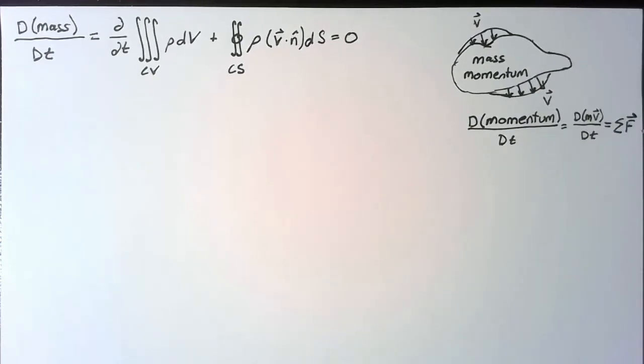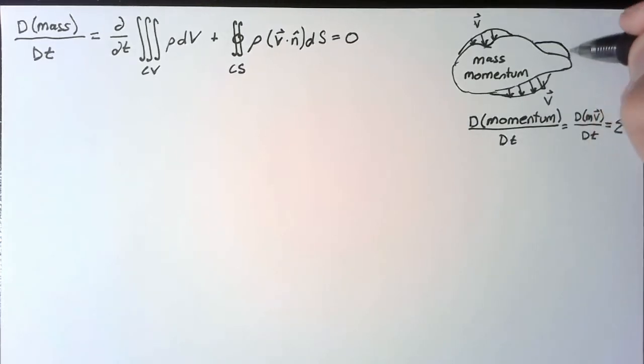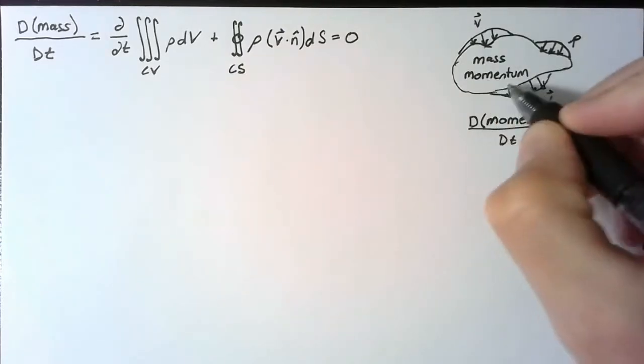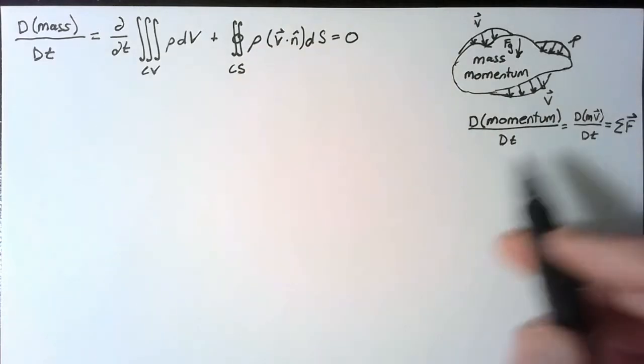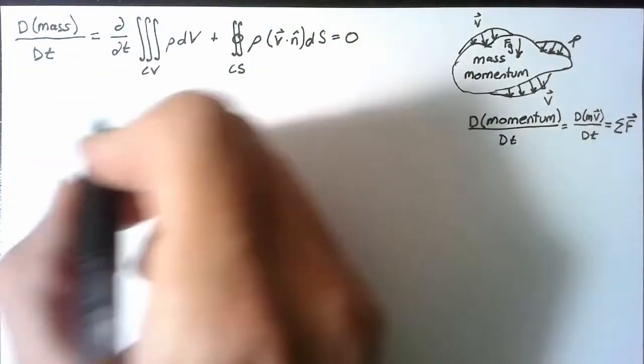So the forces we could be seeing on this could be a variety of things. We're going to look at two. The first is some pressure that's acting on our surface. And then we could also be looking at the force of gravity. So let's write all this out as we have our mass equation.